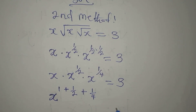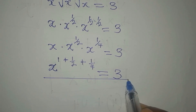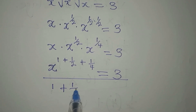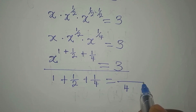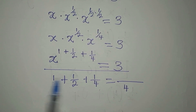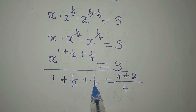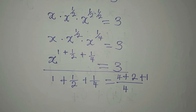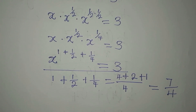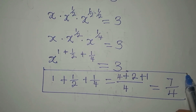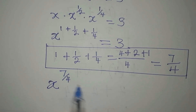So the whole thing equals 3. Let me work out the power: 1 plus 1 over 2 plus 1 over 4. The LCM is 4. That gives us 4 over 4 plus 2 over 4 plus 1 over 4, which equals 7 over 4. So 7 over 4 is now the power of x, and we write x to the power of 7 over 4 equals 3.